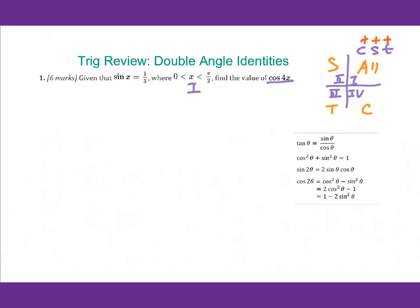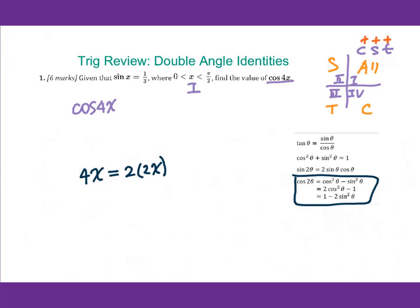For cosine 4x, we will use the double angle formula. For this 4x, we can consider it as 2 times 2x. Therefore, for cosine 4x, I will use the last formula: we can write it as 1 minus 2 times sine squared 2x.